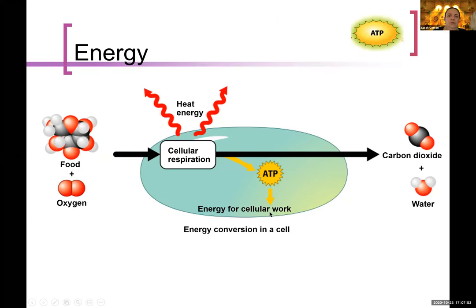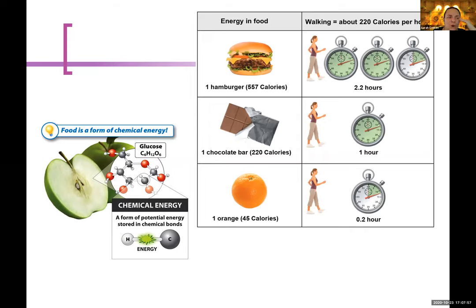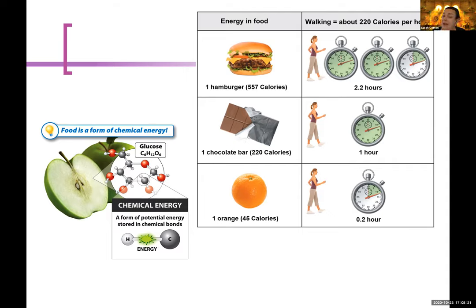If you are a producer, that means you 'make' energy — really it means you're capturing energy and storing it. You're capturing a form of energy and storing it as chemical energy. That's what producers do. Consumers then take advantage of that chemical energy stored by a producer and convert it to other forms — to do work with that energy.